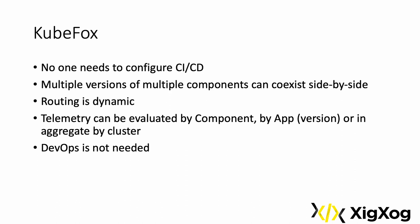One reason why KubeFox can achieve this is because KubeFox routes dynamically at runtime. Requests are evaluated at each component-to-component transition and routed to the correct version of a component for that version of the application. Telemetry is available by component, application, or across the cluster.